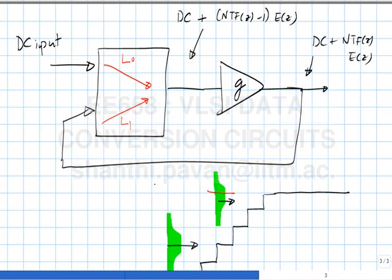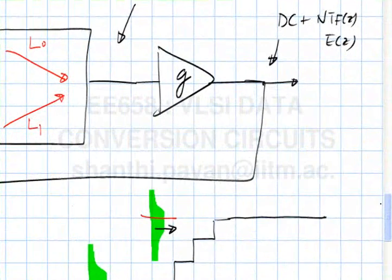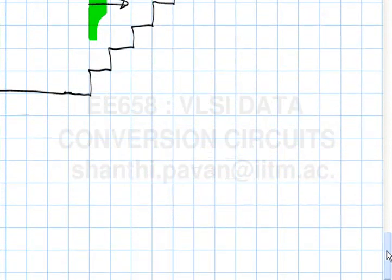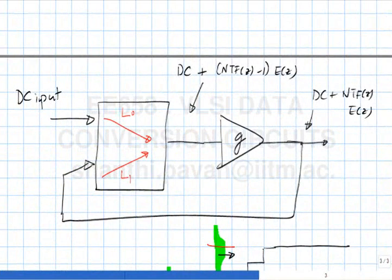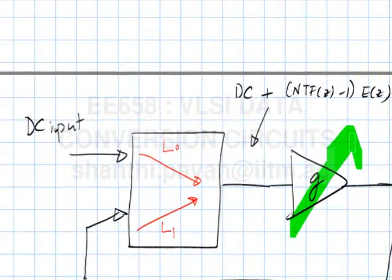How will you figure out at what value of G the poles go out of the unit circle? You are trying to figure out the position of the roots as G varies — this technique is the root locus. By plotting the root locus of this system, you will be able to figure out what the closed-loop poles are for a given G, or rather as G varies from 0 to 1.